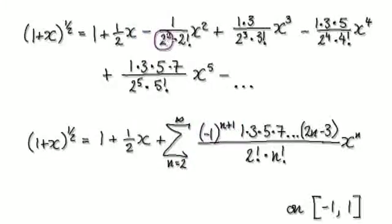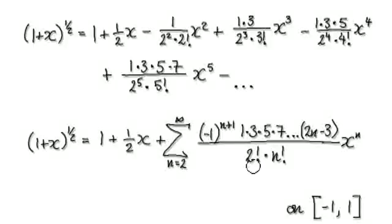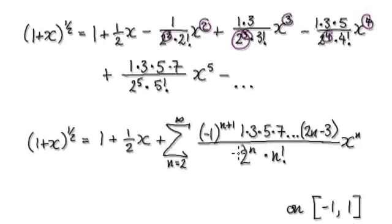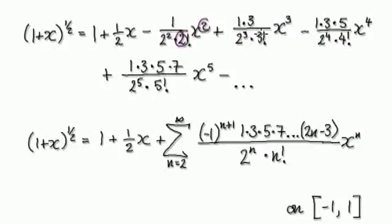If you look at this here, you've got two, two squared — notice that this matches up with this, this matches up with this, this matches up with this. So you're going to have two to the power of n. And then two matches up with this, three matches up with this, four matches up with this, five matches up with this — because you're going to have n factorial.